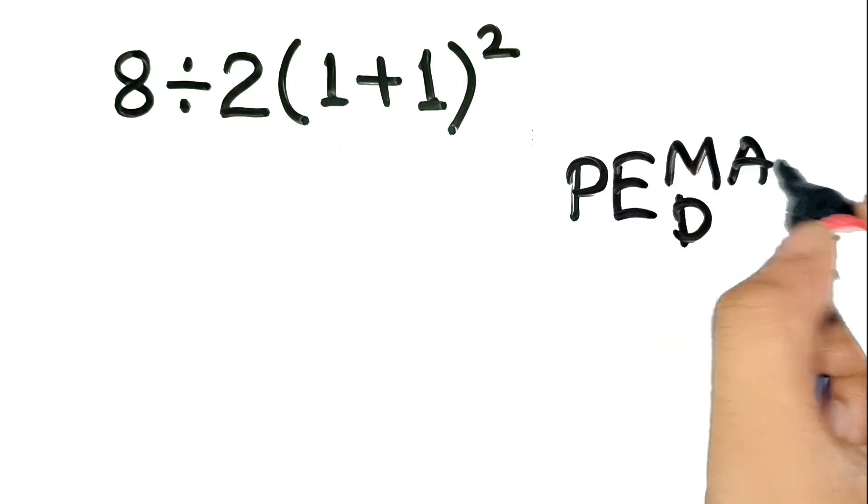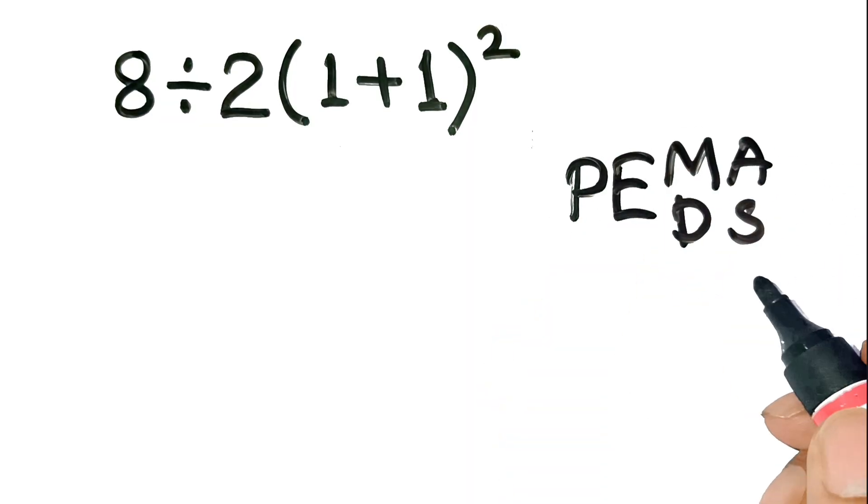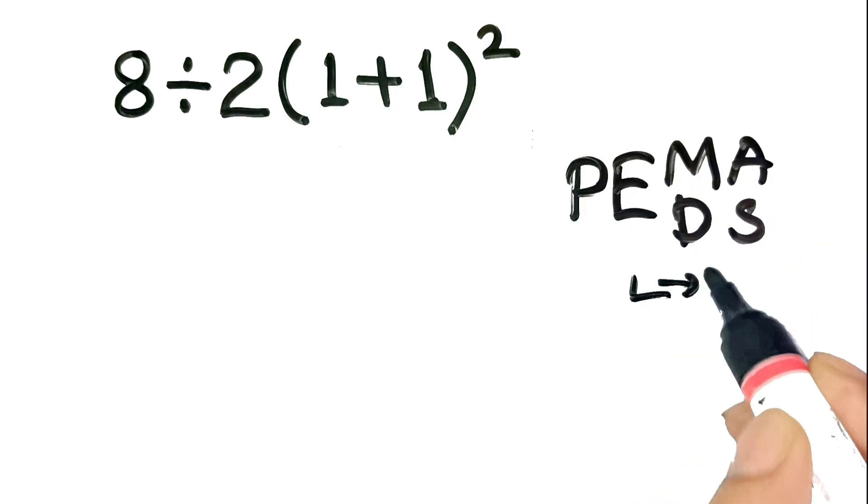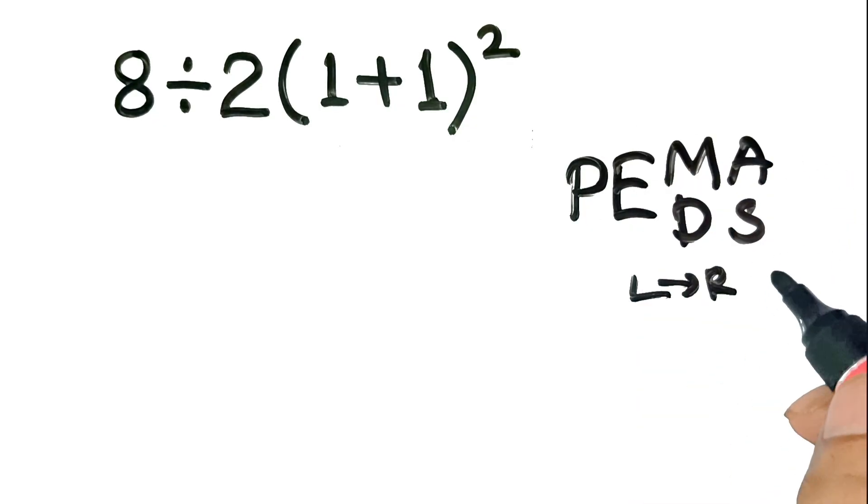Order of operations, or PEMDAS: parentheses, exponents, multiplication and division left to right, addition and subtraction left to right.